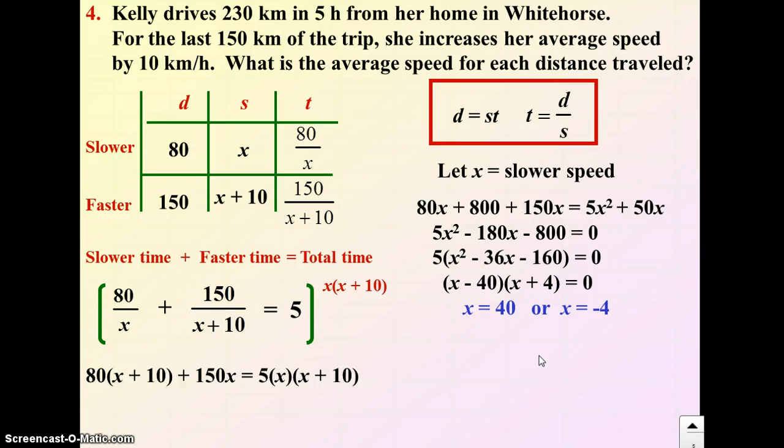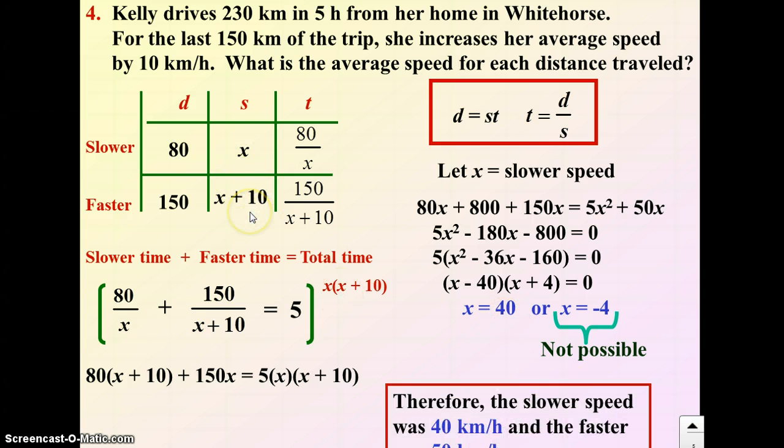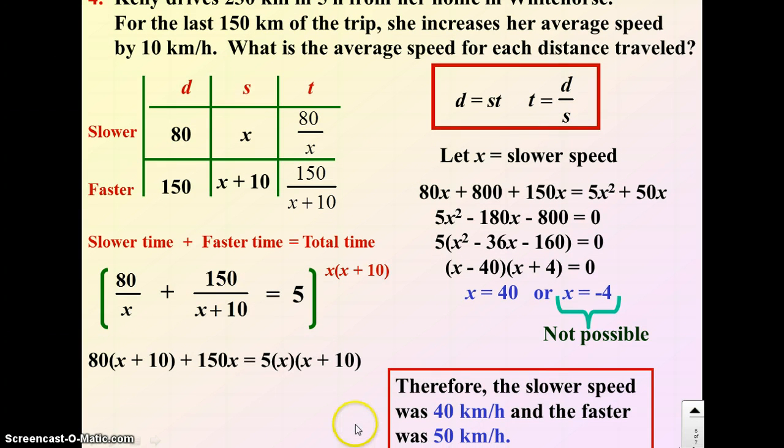Again, one of these makes sense, one doesn't. Does it make sense to have a speed of negative 4? No. So that one's not possible. My speed is 40 when I'm going slower, 50 when we're going faster.